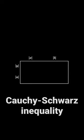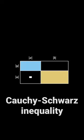Consider a rectangle with dimensions absolute value of a plus absolute value of y by absolute value of x plus absolute value of b. We can decompose this rectangle into four sub-rectangles as pictured here.